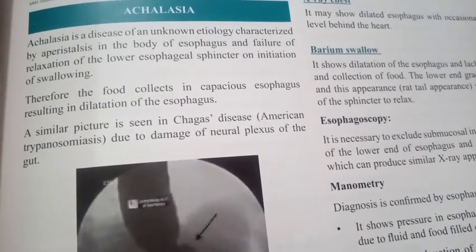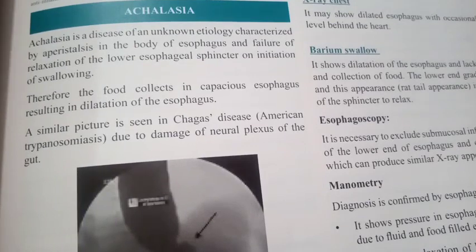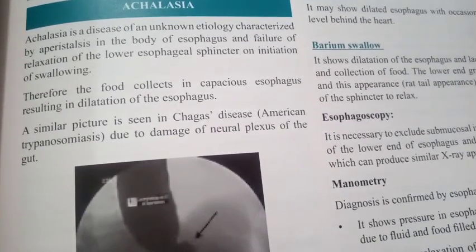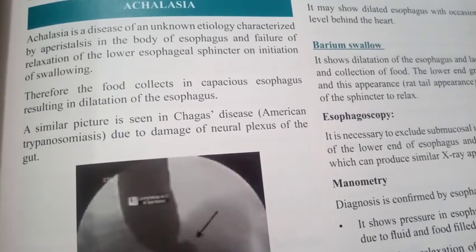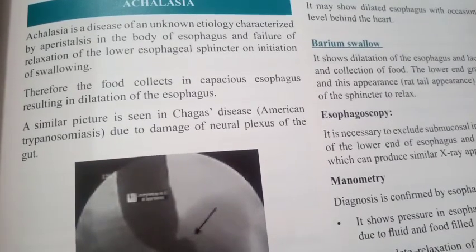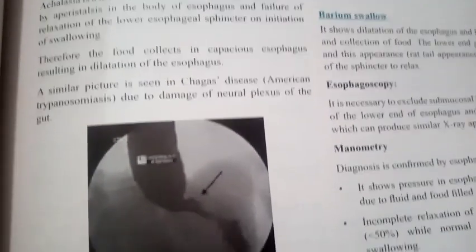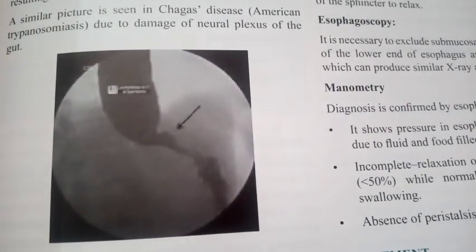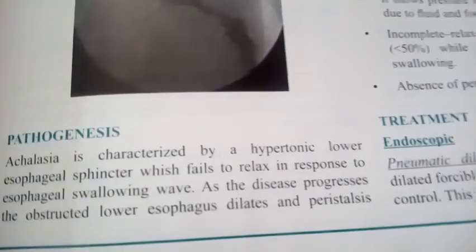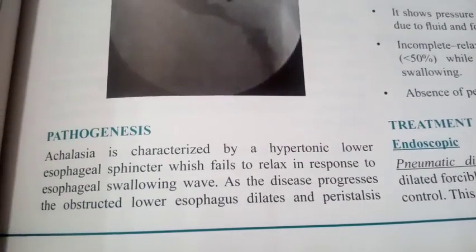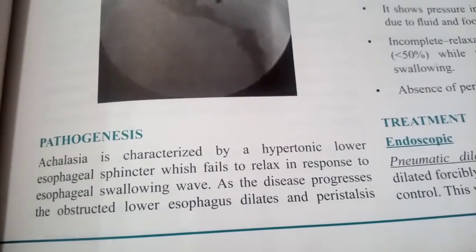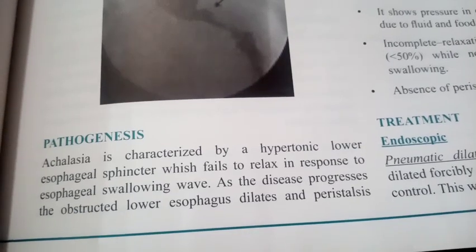This results in dilation of the esophagus. A similar picture is seen in Chagas' disease, American trypanosomiasis, due to the damage of the neural plexus of the gut. In this picture you can see the clear image. Pathogenesis: achalasia is characterized by a hypertonic lower esophageal sphincter which fails to relax in response to the esophageal swallowing wave.